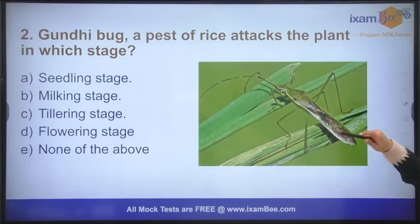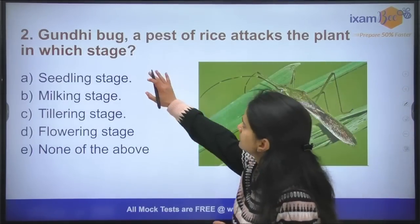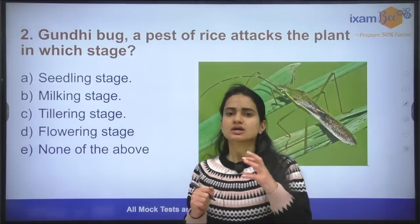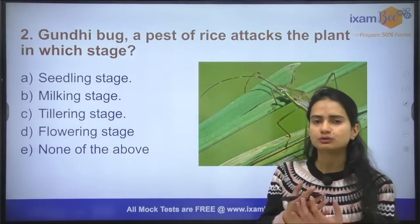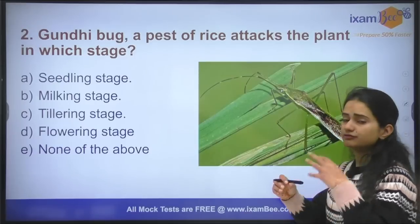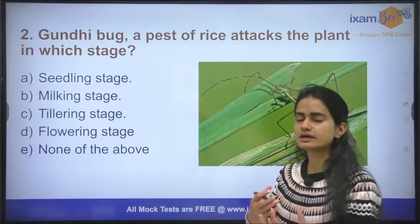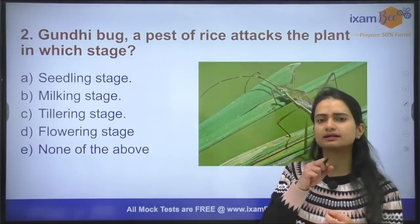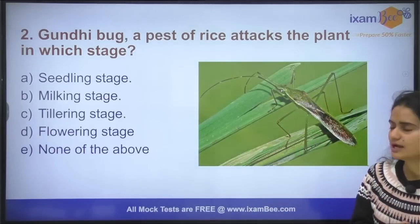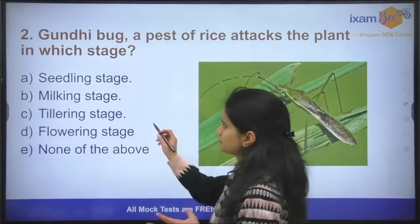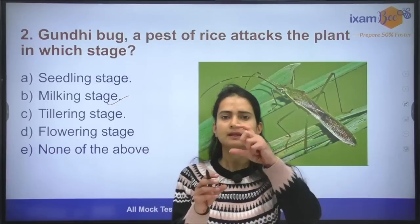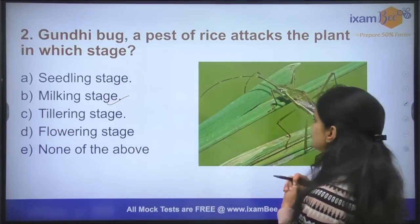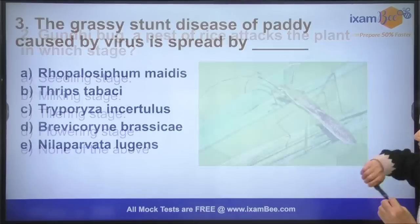Moving on to question number two: the Gandhi bug is a pest of rice that attacks plants at which stage? Gandhi bug is one of the insect pests of rice. When rice is in the field, it attacks at the milking stage, sucking plant sap from the grains while they are in the field.